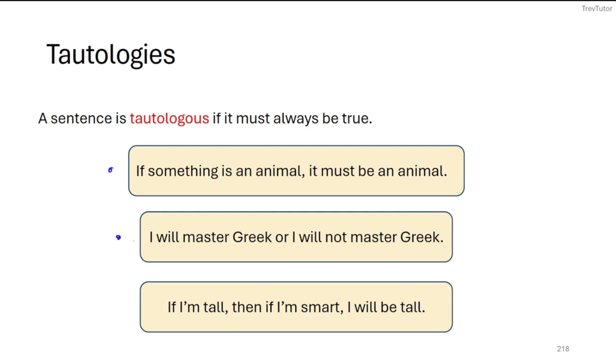I will master Greek or I will not master Greek. Okay, like there is no in between either you've mastered it or you haven't. This is always going to be true. It's like saying, well, you'll get an A in this course or you won't get an A. It's like, well, yeah, that's given. That's how you grade. You either get an A or you can get something else.